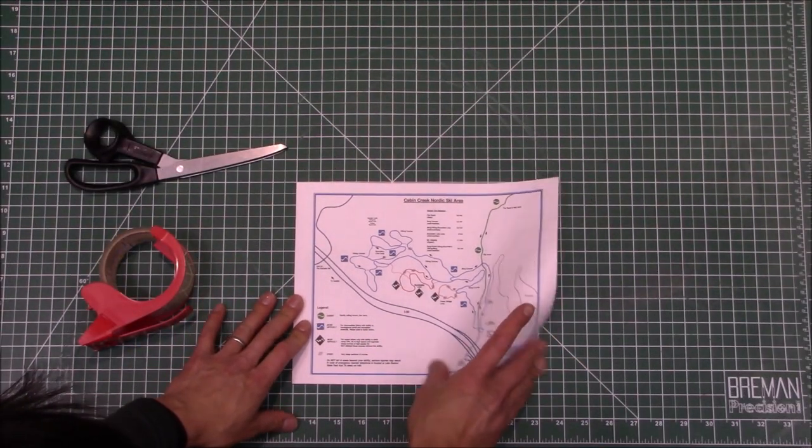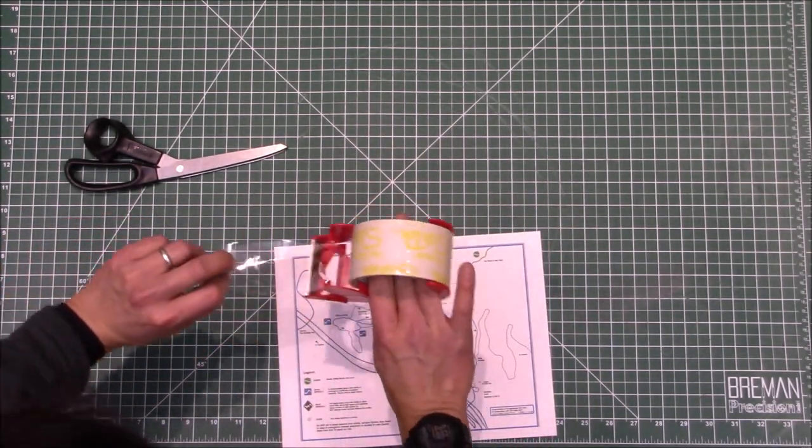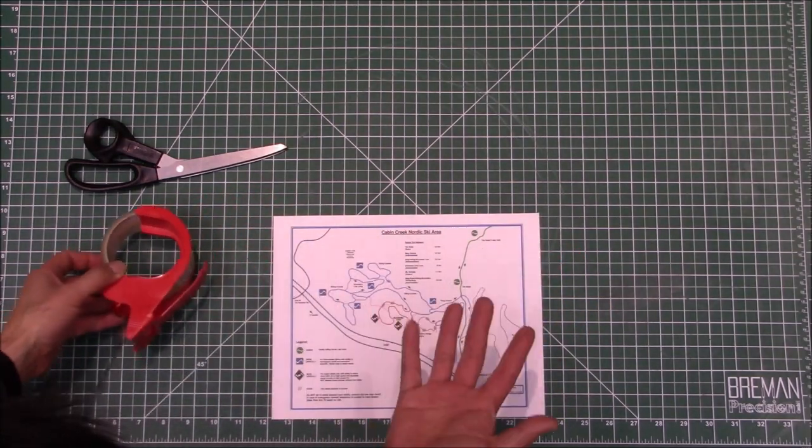Alright, so you've got your document here. Let me show you. This is all we're gonna do: we're literally just gonna take packing tape and place it on top and cover this entire thing with packing tape, both the front and the back.